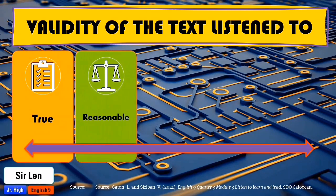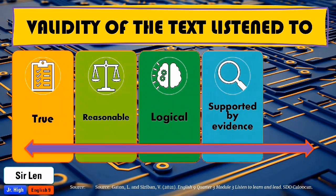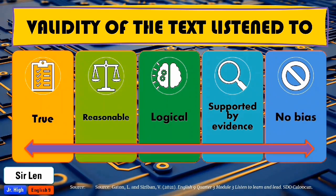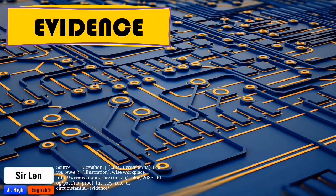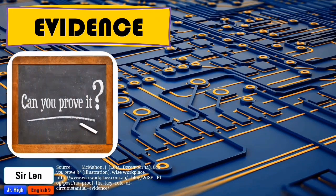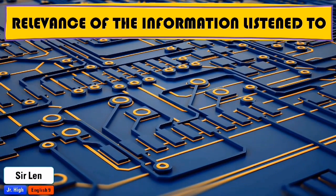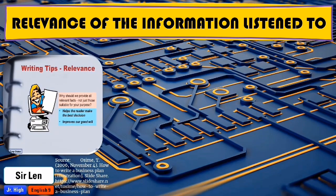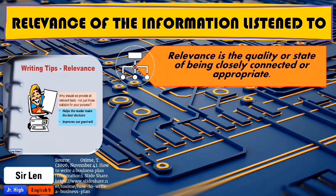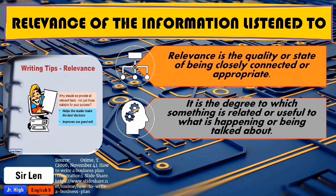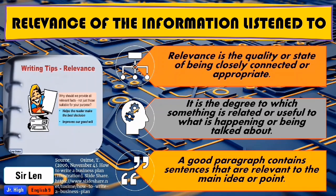The criteria are: true, reasonable, logical, can be supported by evidence, and has no bias. The evidence, on the other hand, must contain information that supports a claim. In judging the relevance of the information listened to, all ideas must be related to the main point. Relevance is the quality or state of being closely connected or appropriate. It is the degree to which something is related or useful to what is happening or being talked about. A good paragraph contains sentences that are relevant to the main idea or point.